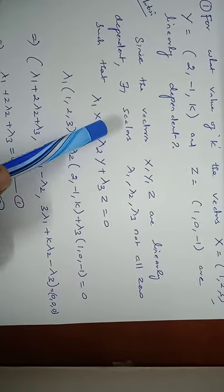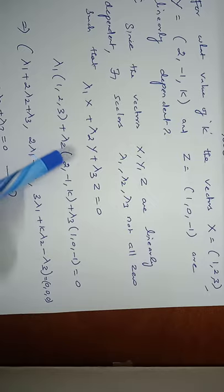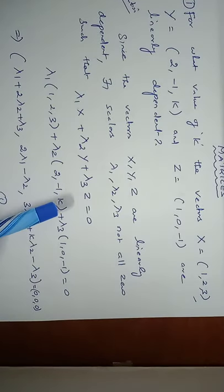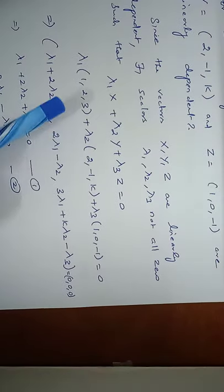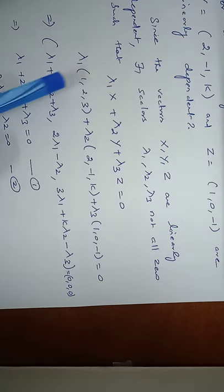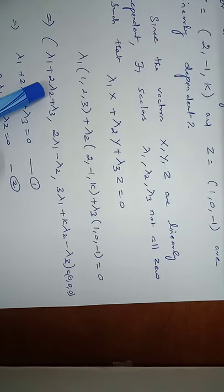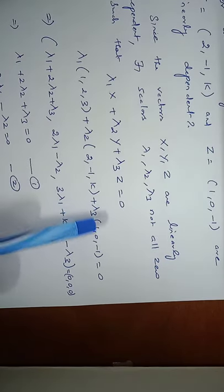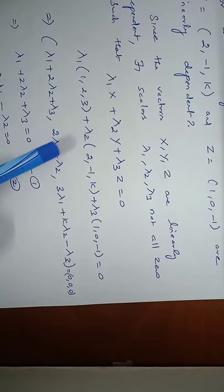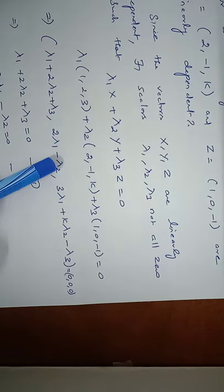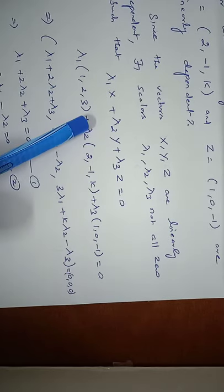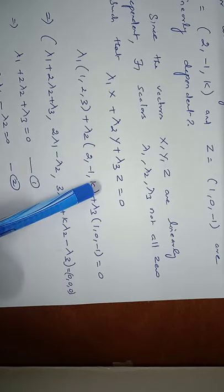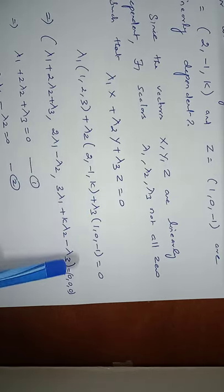Substituting the vector values: Lambda 1·(1, 2, 3) + Lambda 2·(2, -1, K) + Lambda 3·(1, 0, -1) = (0, 0, 0). The first components give Lambda 1 + 2·Lambda 2 + Lambda 3. The second components give 2·Lambda 1 - Lambda 2 (Lambda 3 term is 0). The third components give 3·Lambda 1 + K·Lambda 2 - Lambda 3.